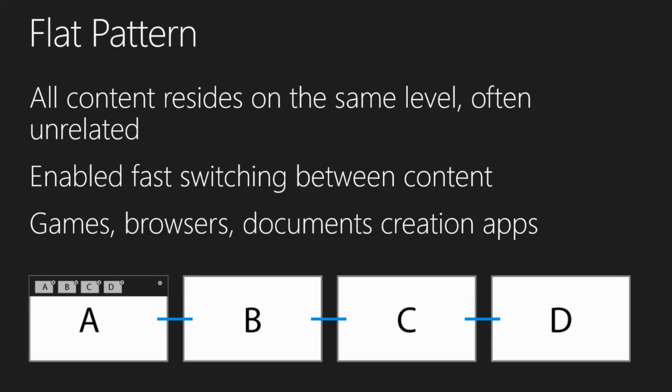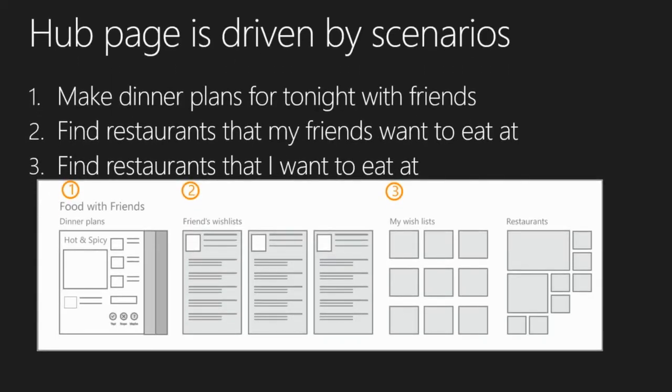Our next design platform is known as a flat pattern. The flat one has one navigation level that works great in fast-switching content scenarios like browsers, documents, and games. They have a direct linear association of how to navigate between content. So why don't we start to work through our particular scenarios and best at statements we had earlier, and see how those align to our hierarchical pattern design.